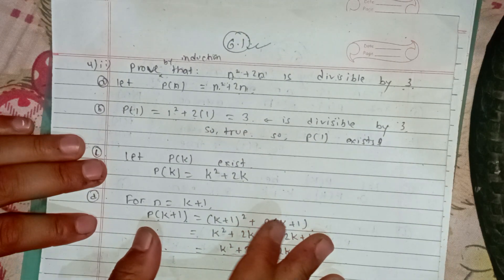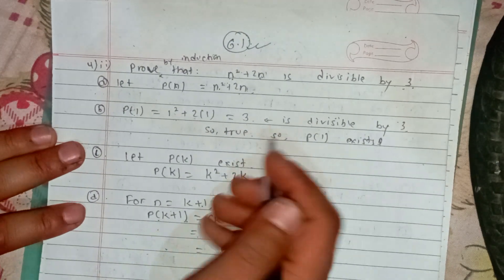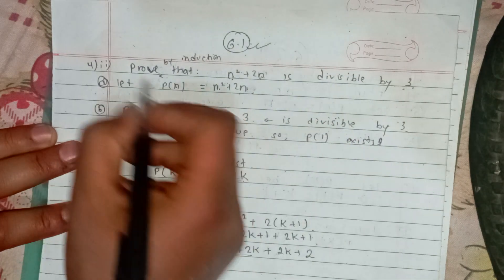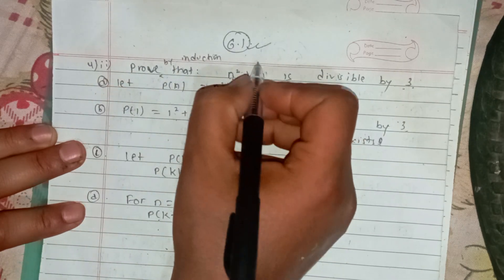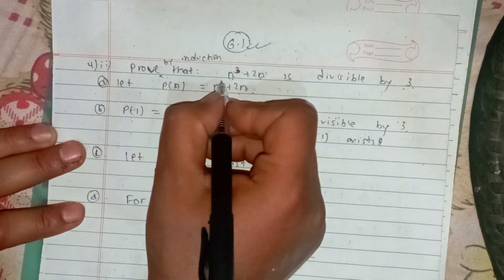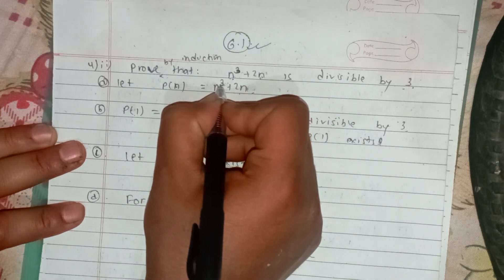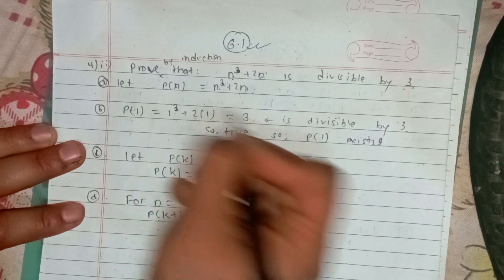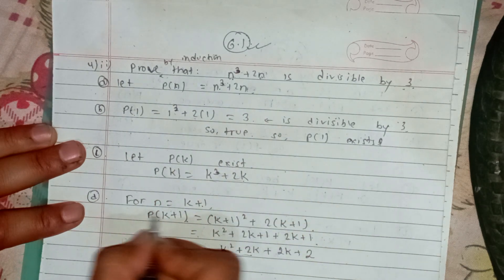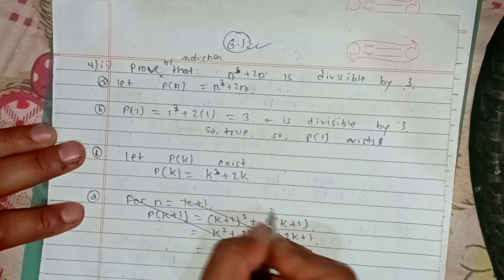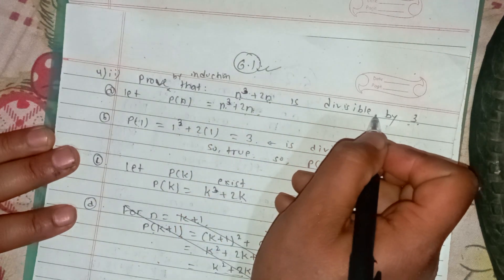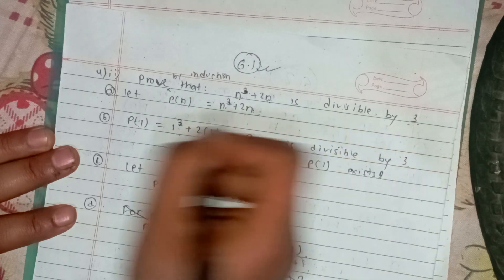Welcome to this video. I am going to explain this video. The question is: n cube plus 2n is divisible by 3. Let us start.